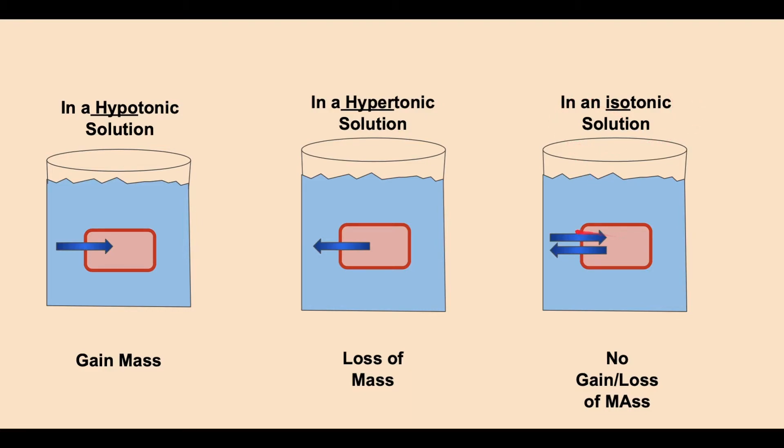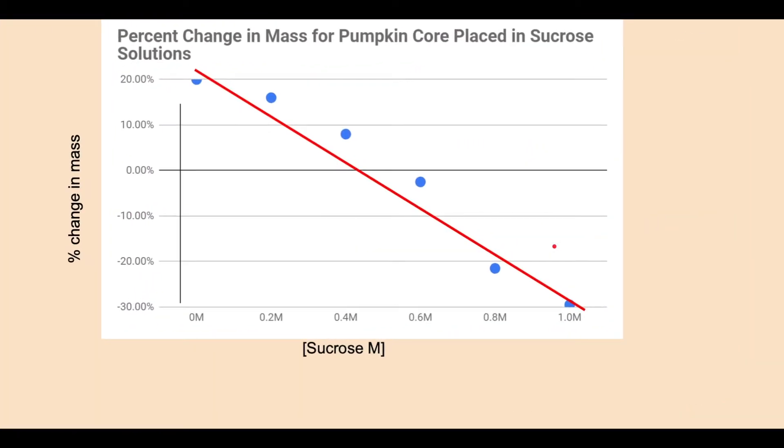So what we're really after is where the isotonic is. This is no change in mass. So we have to find out where your data trend crosses 0. Here's our best fit line. It crosses 0 right around here, and you can find out where the intercept is and extrapolate down. It looks to me about 0.45 molar. So it's greater than the 0.4, less than the 0.5.